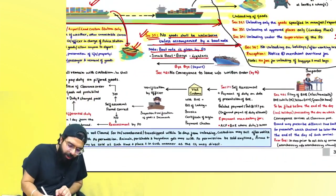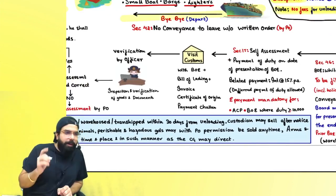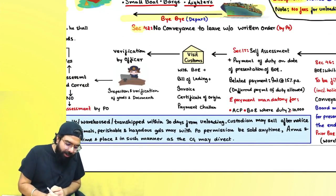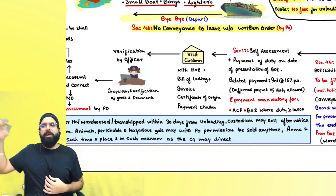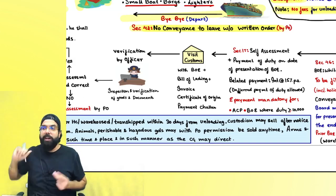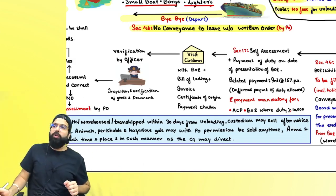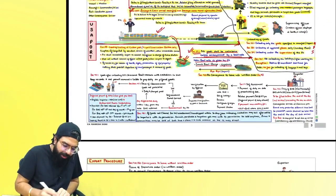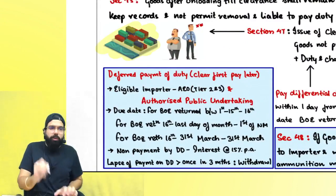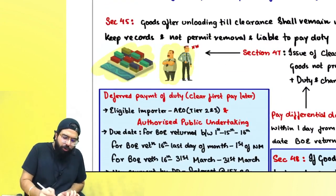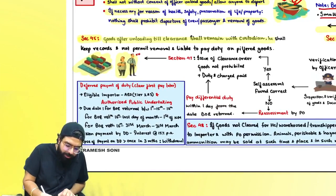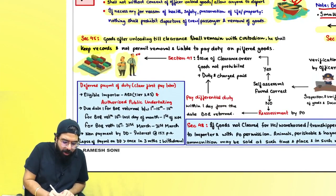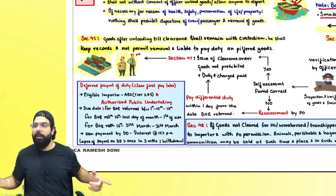After unloading is done, the vessel will be leaving. Before leaving, section 42 says it should take a return order — a departure order — from the proper officer. No conveyance may leave without a departure order. When goods reach the port, they will remain with the custodian. Section 45 says goods after unloading until clearance will remain with the custodian, who shall keep records and not allow anyone to take the goods.